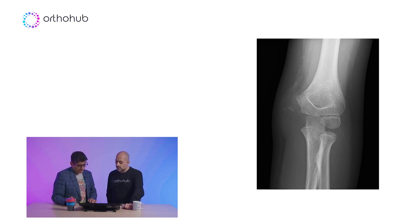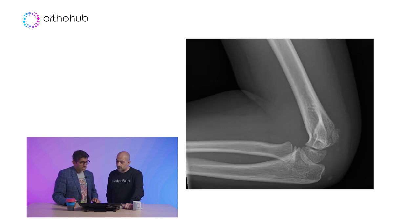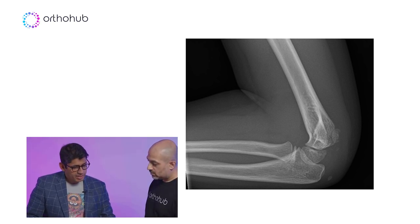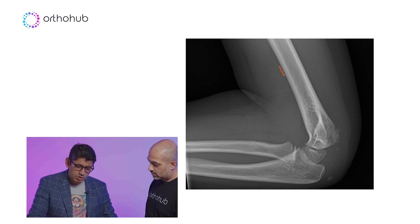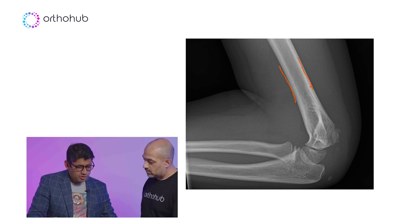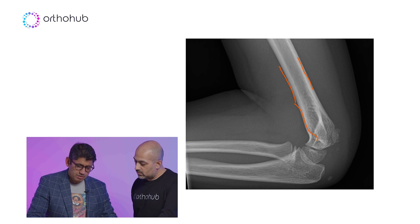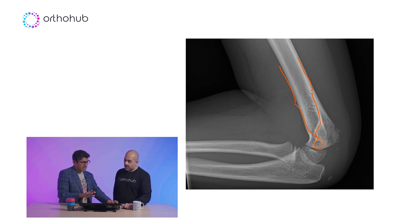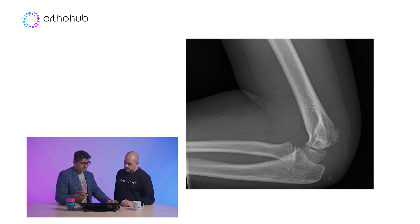So that's your AP view. Then you're going to move on to your lateral view. One of the things you want to do first is look at how well your lateral view has been taken, because that's going to influence whether you pick up some fractures or not. You want to look for your anterior cortex and your posterior cortex - you should see them converge like this into an hourglass onto the epicondyle, that'd be your supracondylar ridge. You can see here you can't see that brilliantly, so there's a degree of rotation in this one.